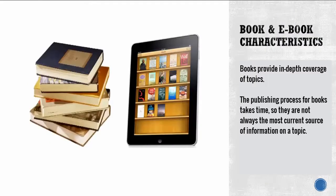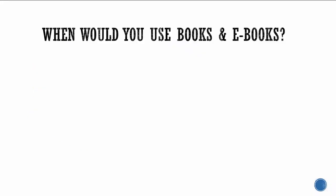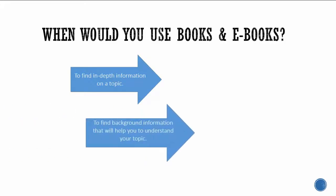Let's start with the characteristics of books and ebooks. Books provide in-depth coverage of topics. The publishing process for books takes time, so they're not always the most current source of information on a topic. Books are best used to find in-depth information on a topic, as well as background information that will help you understand your topic. They also help you find historical information.